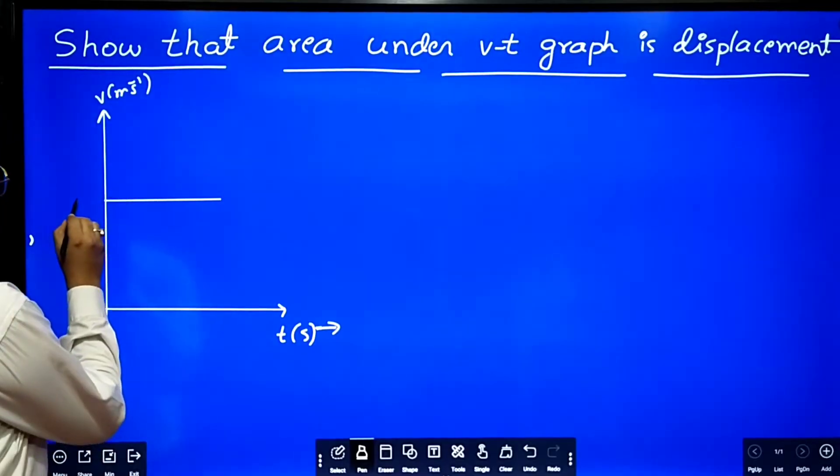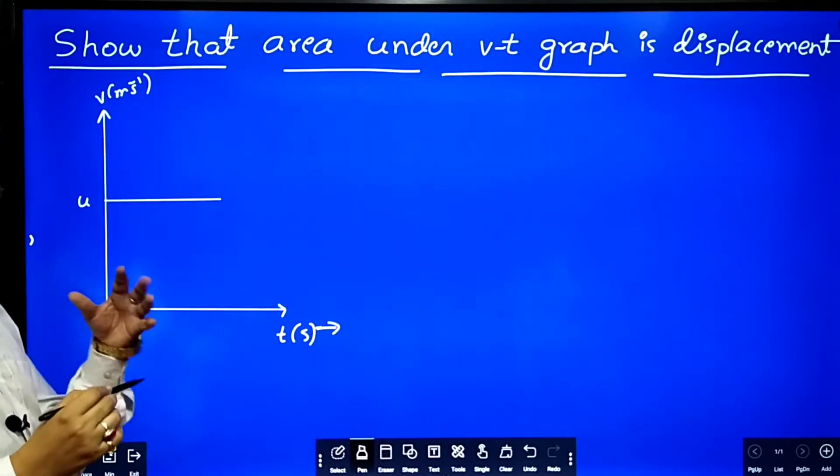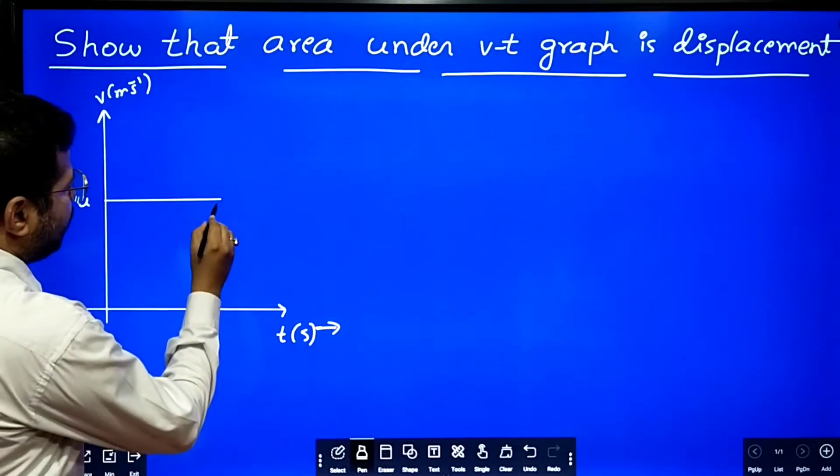Now say a car is moving with some constant velocity u for some time t.